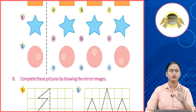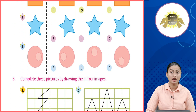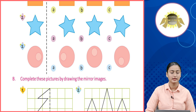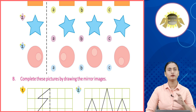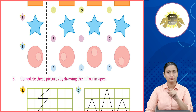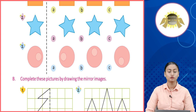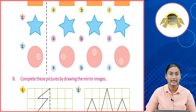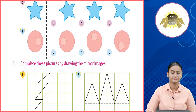Second pe hai aapka ekdam straight star — ye match karayega option number B se. Number three pe ek bada circle, right hand side pe ek chota circle — toh ye aapka match karayega option number A ke saath.